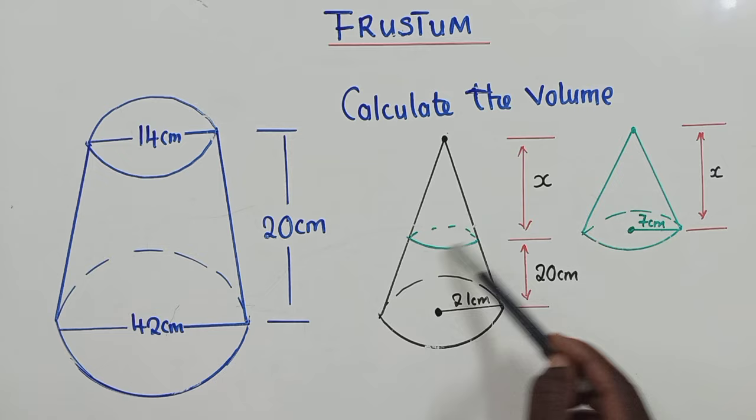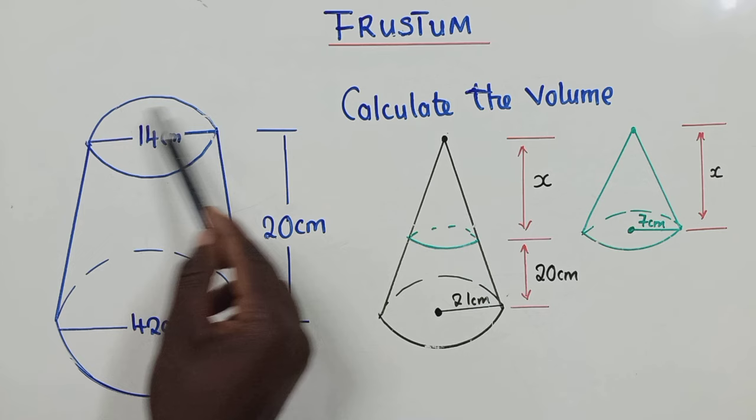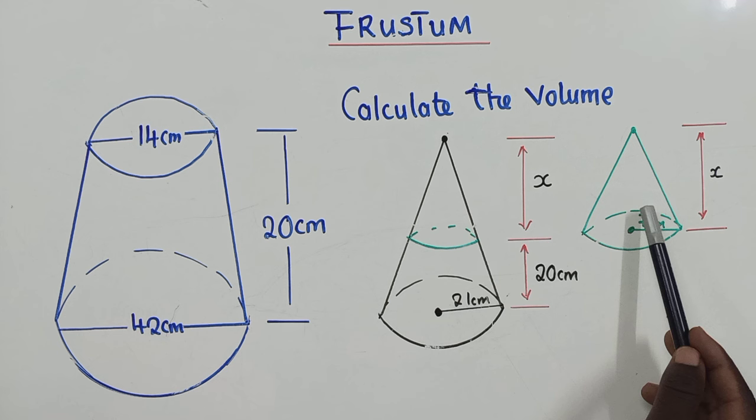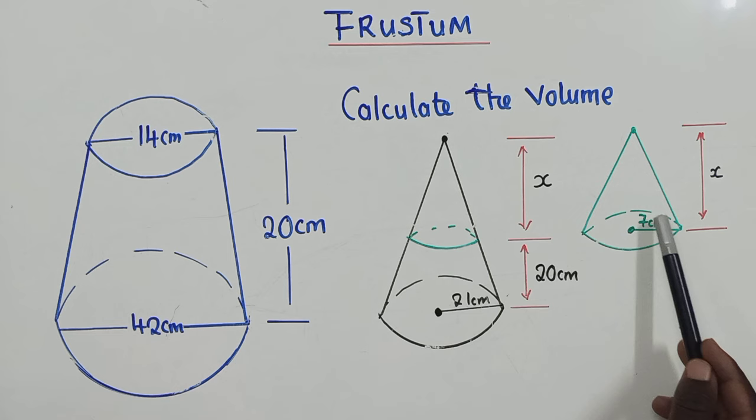So from here to here, it's 20. This part here, it's over here, and this other part is right here. So the base of the cone that has been cut, or the top part that has been cut, is right here.